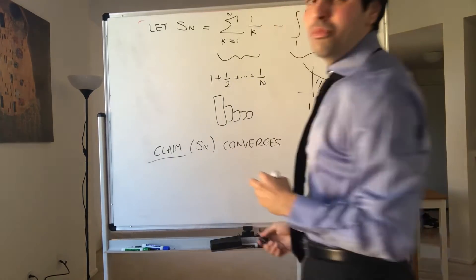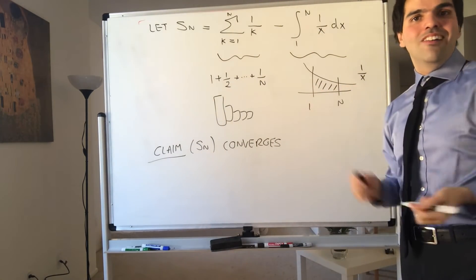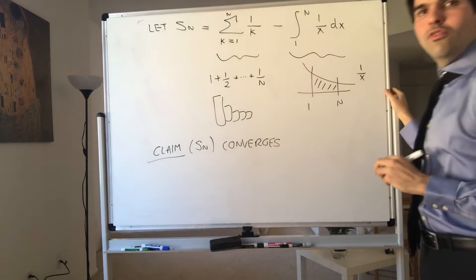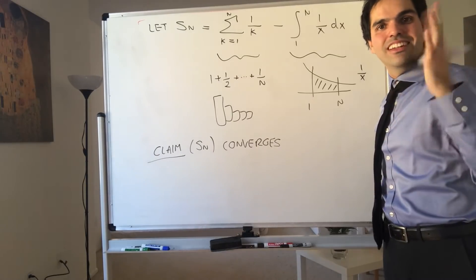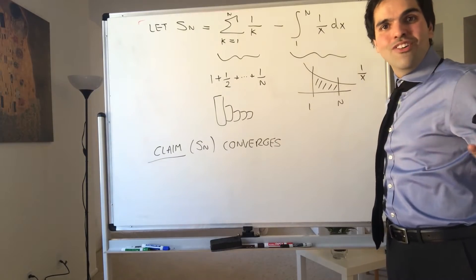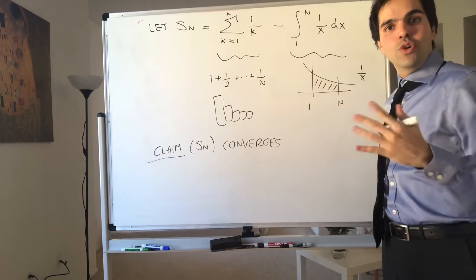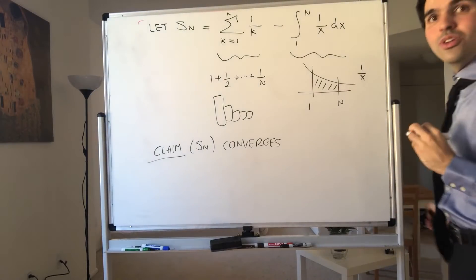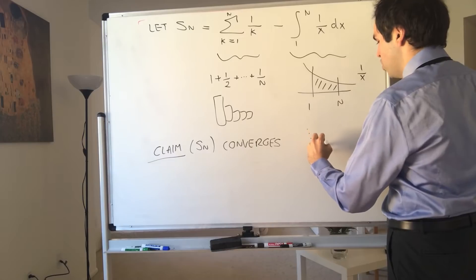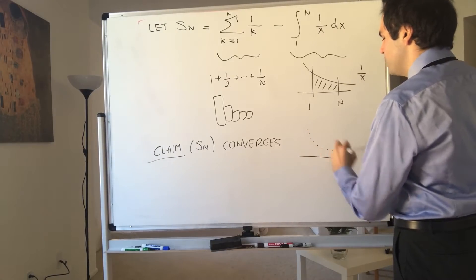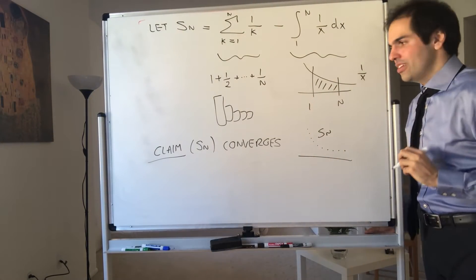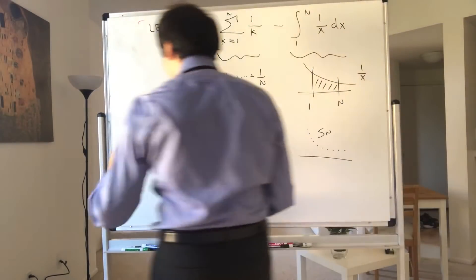And not to spoil the surprise, but the limit will be called the Euler-Mascheroni constant. The question is: how do we show it converges? It's very hard to do with epsilon-delta, but remember there's a beautiful tool that helps us show that sequences converge: the monotone sequence theorem. If we show that our sequence is decreasing and bounded below, then automatically we know the sequence converges. Let's show that.